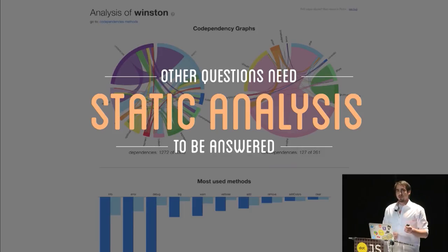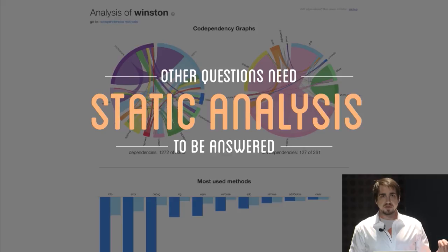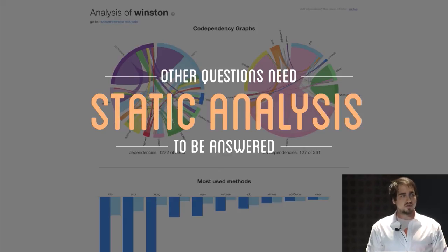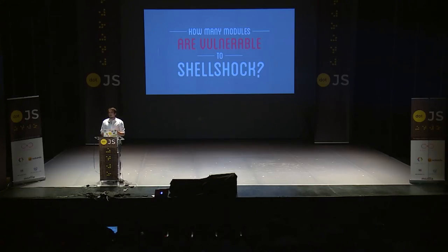There are other types of questions that are way more interesting than these pure graph questions, but they require static analysis. In these questions, we go out, find what packages we want to visit on the graph, and then perform static analysis on each one of those nodes. For example, we can count all the usages of a module's methods and display it to the module authors. There are extremely wide problems this can solve, such as how many modules are vulnerable to the ShellShock vulnerability released earlier this year — checking which environment variables passed to something like child_process.exec have unsanitized values attached to them.